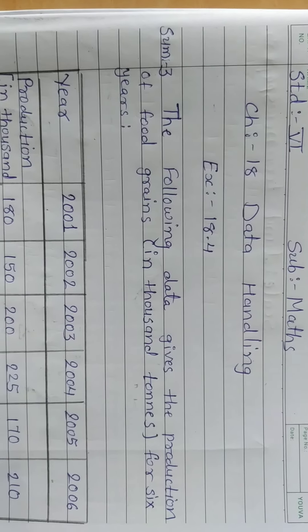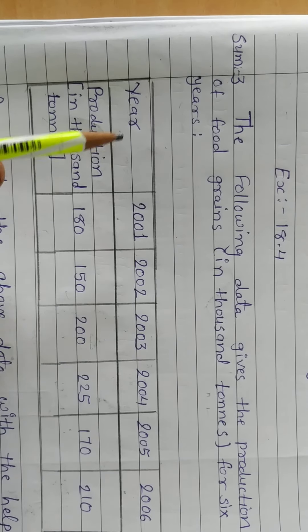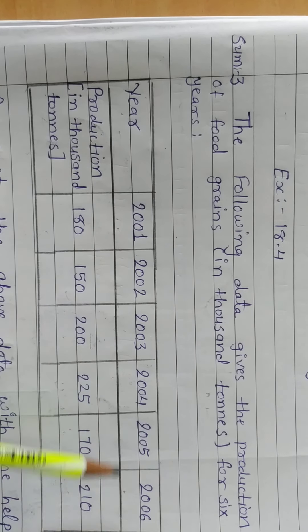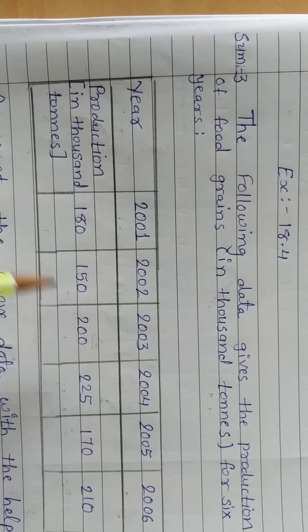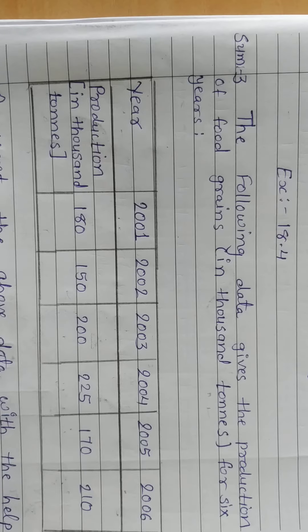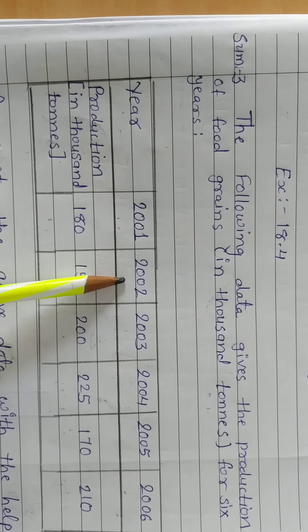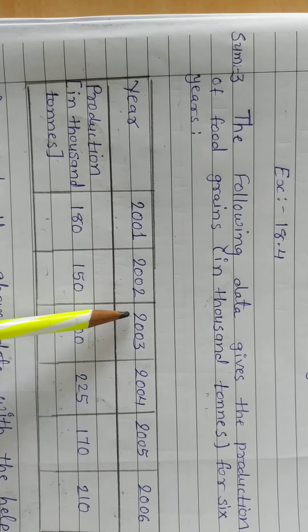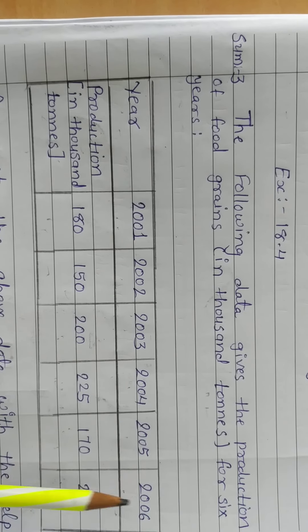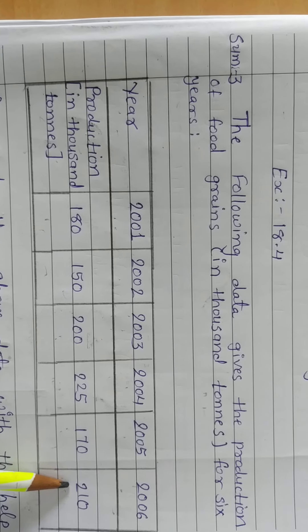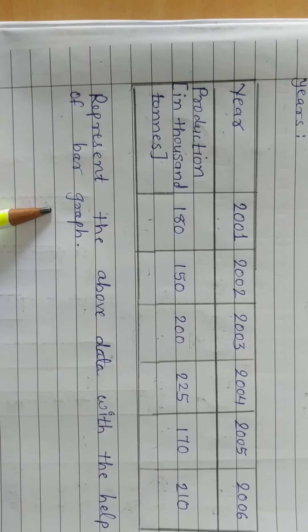The following data gives the production of food grain in 1000 tons for 6 years. Here we have a table given in 2001-2006 how much food grain is produced in 1000 tons. 2001: 180, 2002: 150, 2003: 200, 2004: 225, 2005: 170, 2006: 210. We say represent the above data with the help of bar graph.